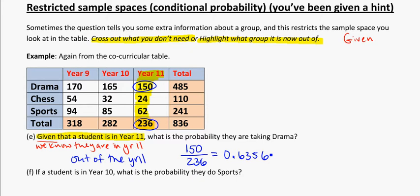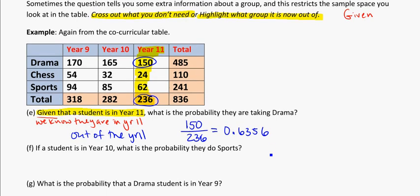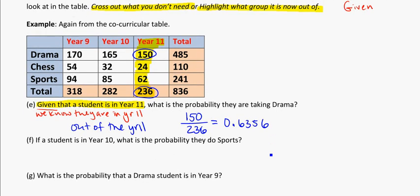Okay, so that's our given. So narrowing down the sample space. If we look at the next problem. If a student is in year 10, what is the probability they do sports? So I have not used the word given here. But they've told me if the student is in year 10.